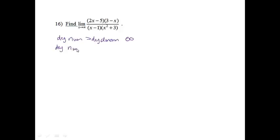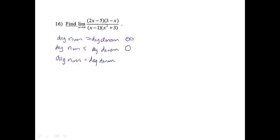If the degree in the numerator is less than the degree in the denominator, that means the bottom is growing faster, which means our number is going to keep getting smaller and smaller, so that limit will be zero. And if the degree in the numerator is equal to the degree in the denominator, that means they're growing at the same rate, and to get the limit, we will find the ratio of the leading coefficients.